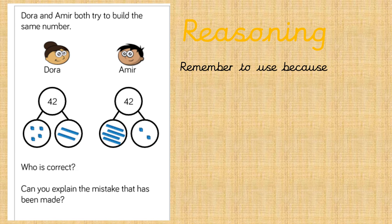We're going to do the same here. This is the second reasoning question. I will read it to you and then you'll need to pause the video and write down your answer before you move on to the next one. So Dora and Amir both try to build the same number — they're trying to build the number 42. So who is correct? Can you explain the mistake that has been made? You will need to write 'Dora because' if Dora is correct, or 'Amir because' if Amir is correct. So pause the video now and write down your answer.